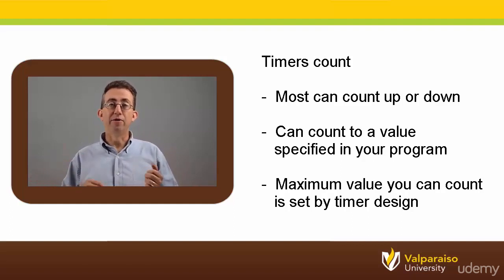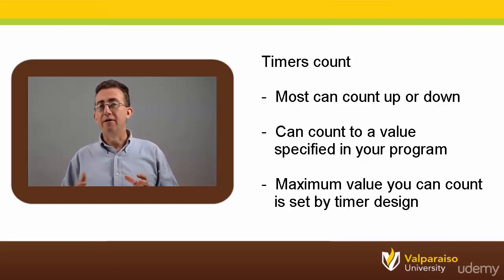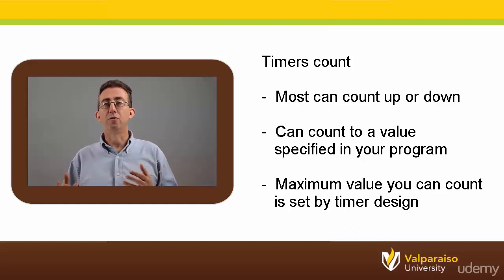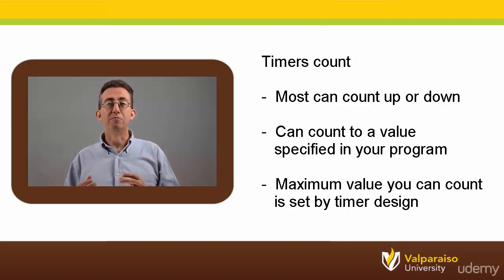Most timers can count up or down, depending on how flexible their design is. However, most of the time we think about timers counting up from zero. If they count up, you can specify in your program how high you want the timer to count to. For example, you can tell a timer to count for 10 seconds and let you know when it is done. However, timers cannot count forever — they do have a maximum value specified by how they were designed.